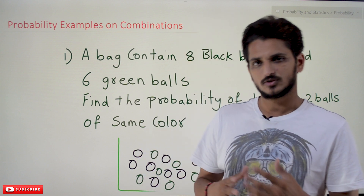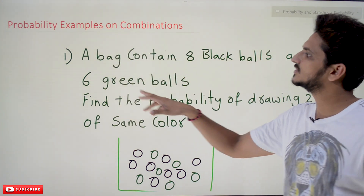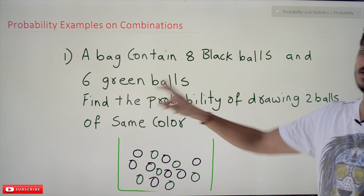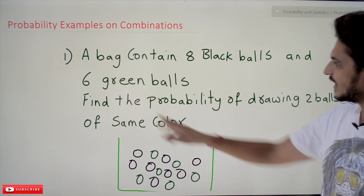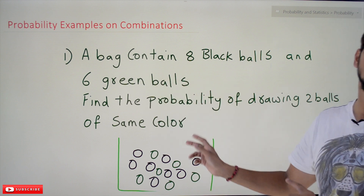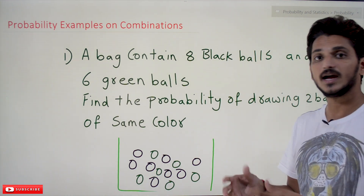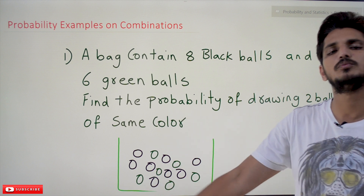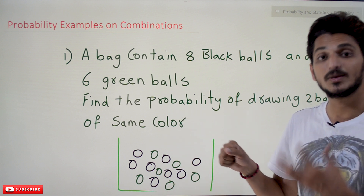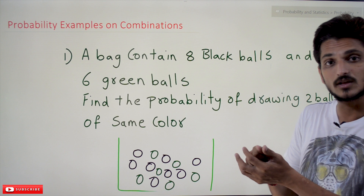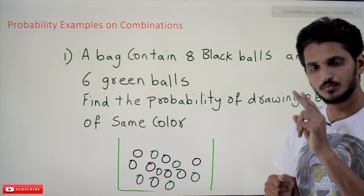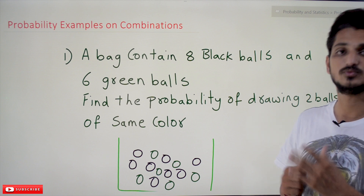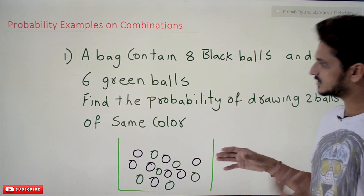Coming to today's class, we'll take an example and understand probability with combinations. A bag contains eight black balls and six green balls. Find the probability of drawing two balls of the same color. So we are having a bag with eight black balls and six green balls. If you randomly pick two balls from the bag, what is the probability that those two balls are of the same color — either both black or both green?